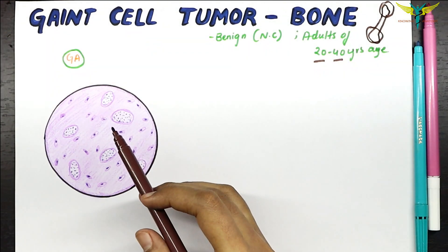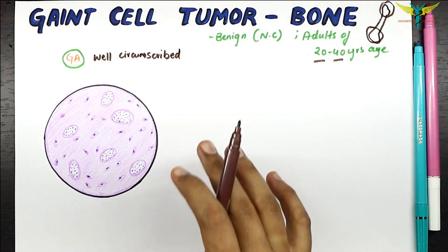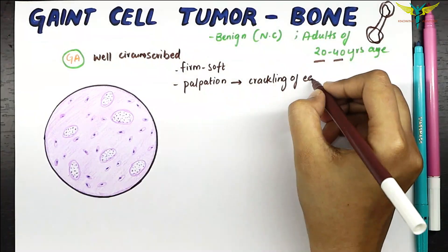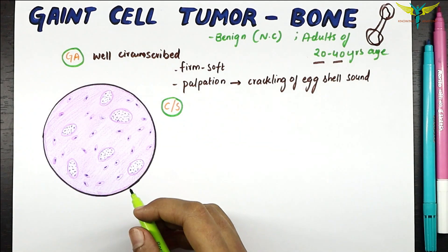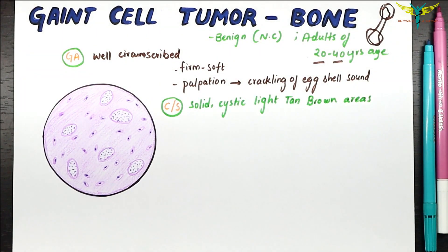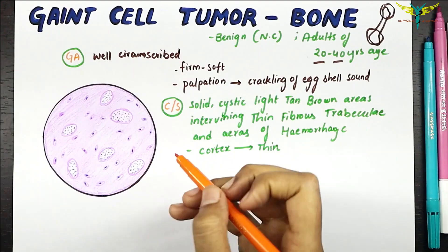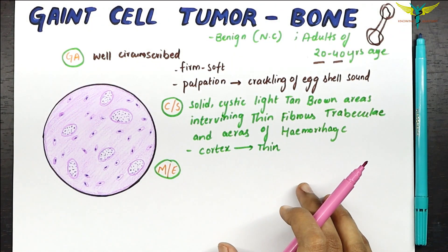Coming to the gross appearance: the size of the tumor varies and it is a well-circumscribed tumor. It is firm to soft, and on palpation it produces a crackling or eggshell sound. The cross section of the tumor shows solid and cystic tan and light brown areas with intertwining fibrous trabeculae and areas of hemorrhage. In the cross section, the cortex is thin.